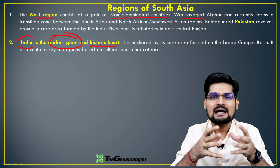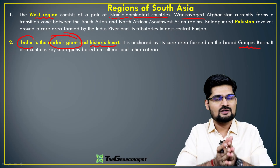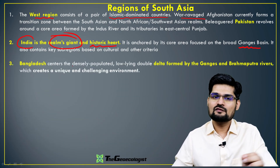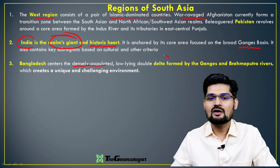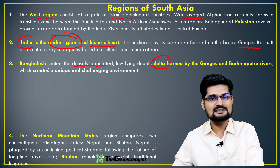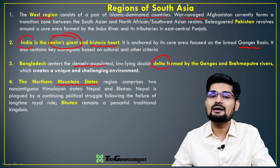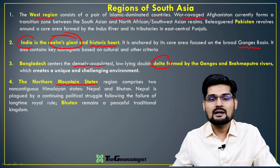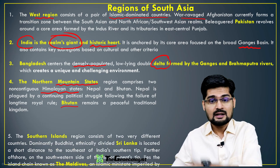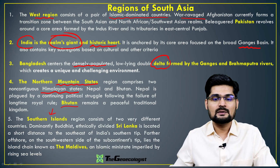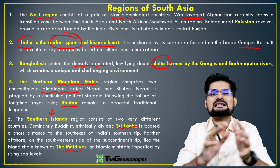India is inhabited across the Ganga and Brahmaputra valleys. Bangladesh is one of the most densely populated regions in the world, with the unique physiography of the Ganga-Brahmaputra delta. The northern mountain states include Nepal and Bhutan, part of the Himalayan states with unique cultural heritage. The southern island portions are dominated by Sri Lanka, Maldives, and some islands that are part of Indian territory.